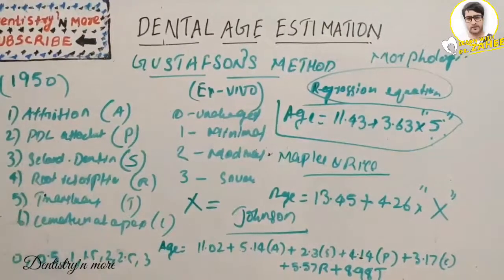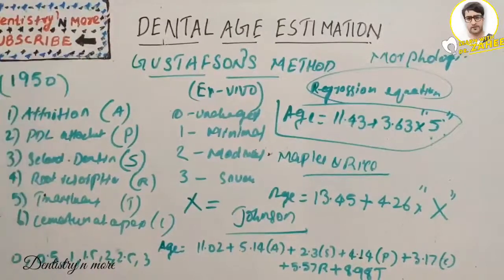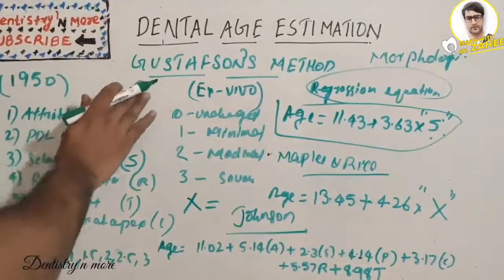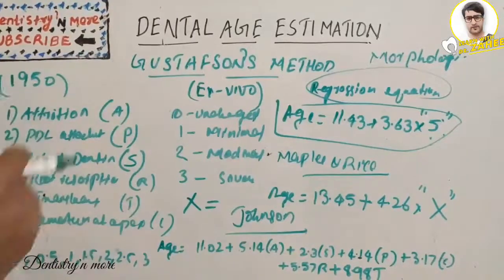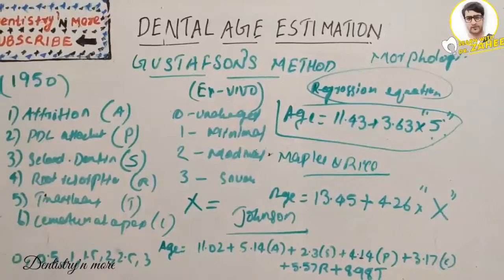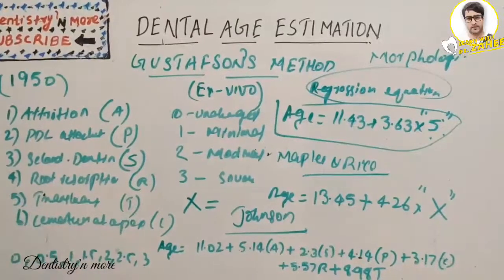That's all about the two methods — Gustafson's and Demirjian's. Next, important topics in age estimation will be covered in future sessions. I hope you understood this method. For your exam, make sure to write all the content on Gustafson and Demirjian. Thank you.